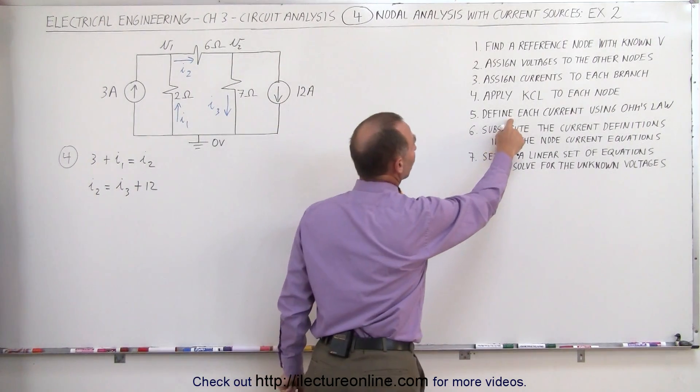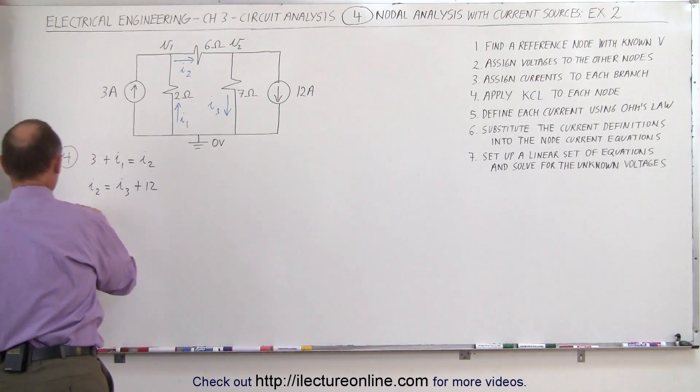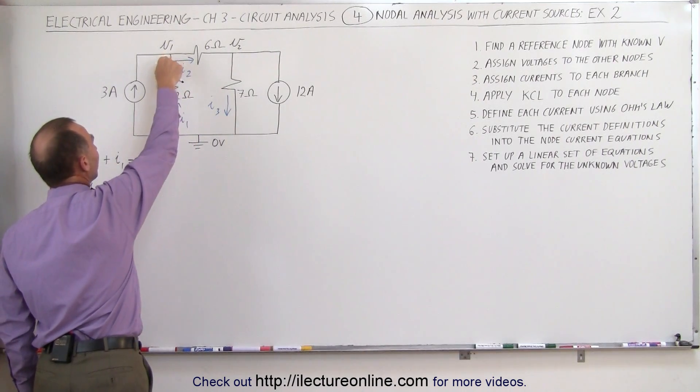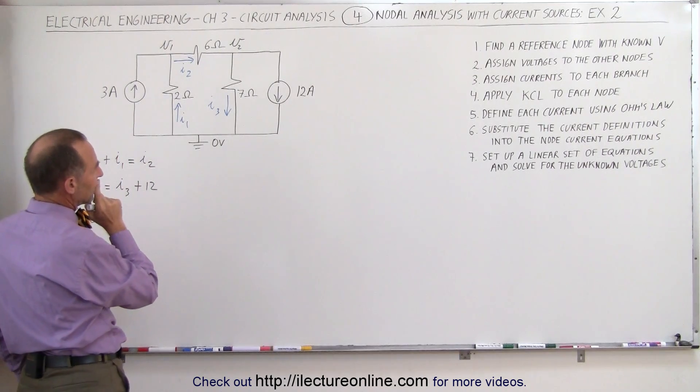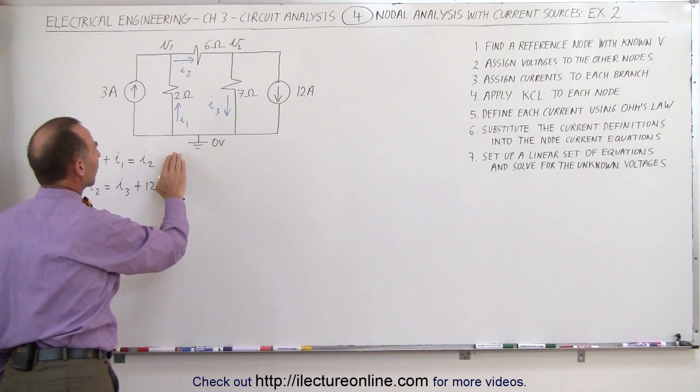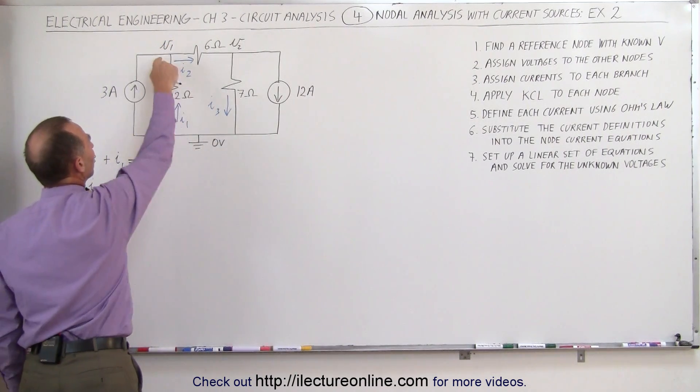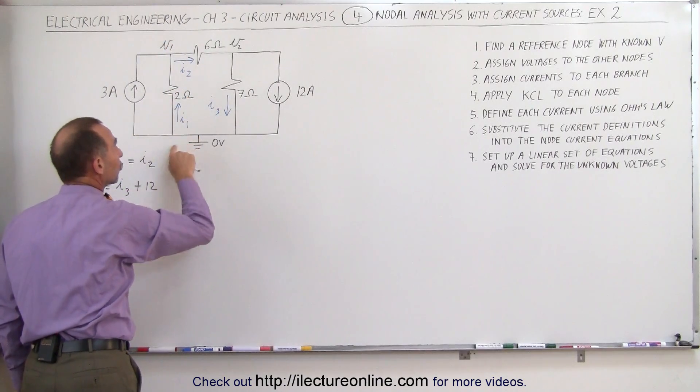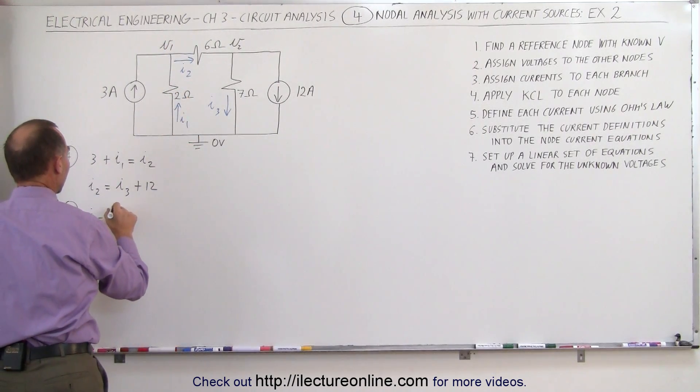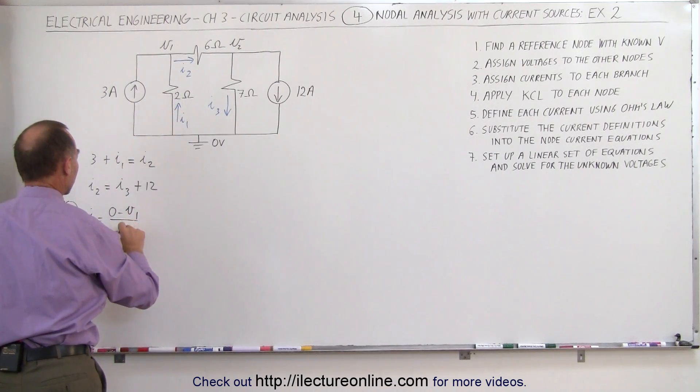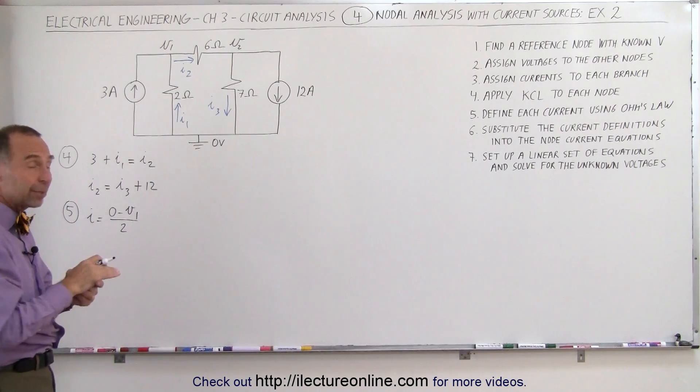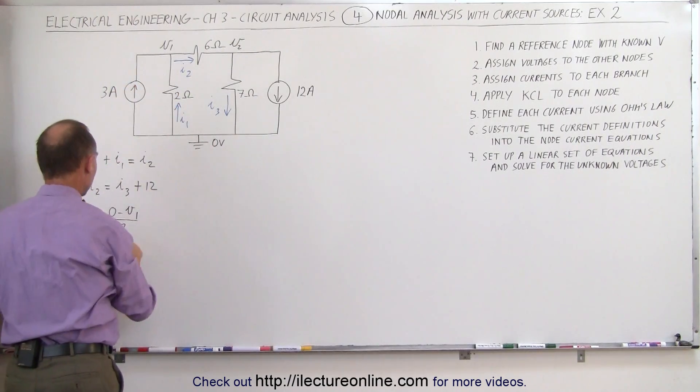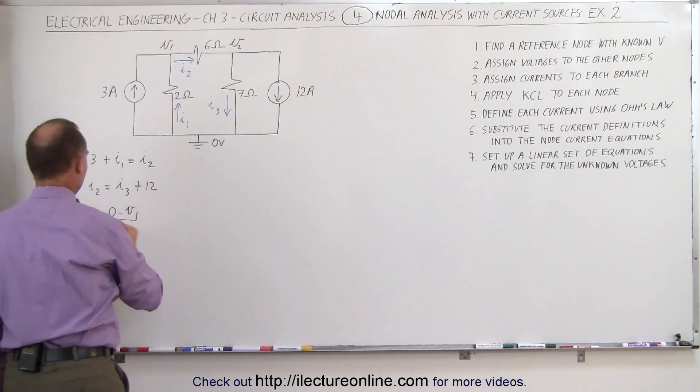The next step, we're going to define each of the currents using Ohm's law. For step five, we can define I1 as the drop in potential on this branch. Now let's see here. I'll take that back. Since the current is flowing in this direction, this should be at higher potential than this. So we're going to subtract where the current is coming from. We're going to track where the current is going to from the voltage where the current is coming from. So in this case, we're going to write zero minus V1 divided by the resistance on that branch, two. Remember that current flows from a higher potential to a lower potential, so therefore V1 should be at a lower potential than the zero volts. So zero minus V1 is the voltage drop divided by the resistance.